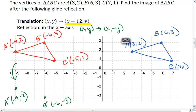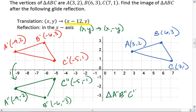So C prime, which is at negative 5, 1, gets mapped to C double prime, which is negative 5, negative 1. And this green is our final answer. So the image of triangle ABC after the glide reflection is triangle A double prime, B double prime, C double prime, which we see right here.